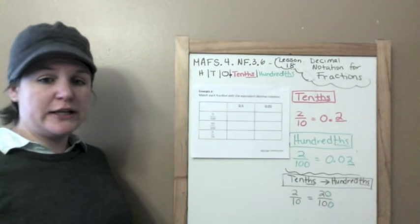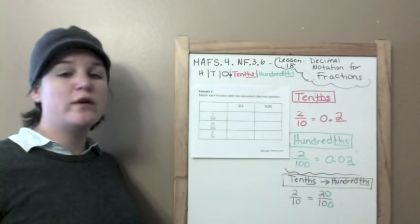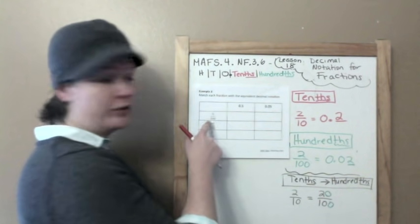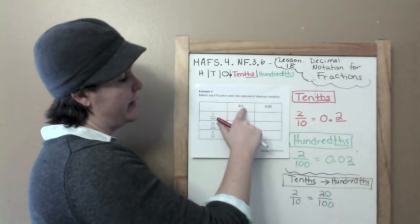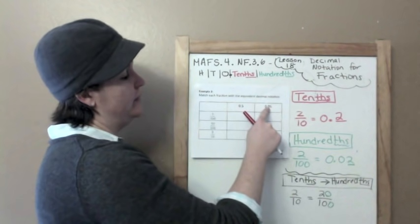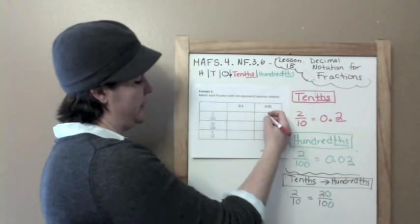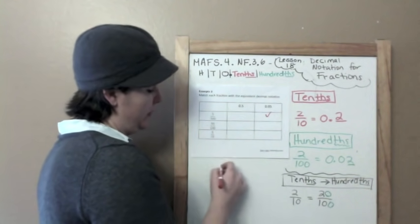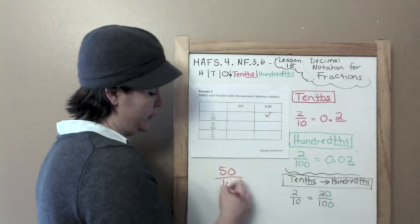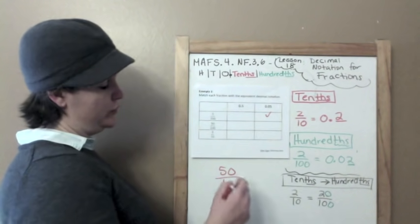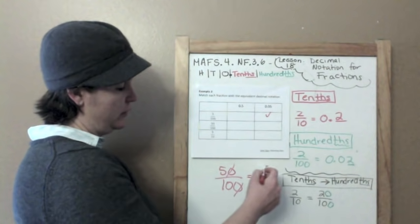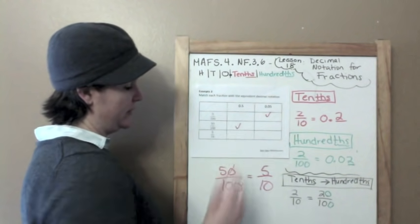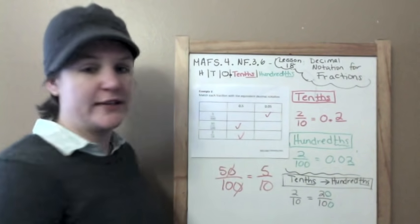All right, example three. Match each fraction with the equivalent decimal notation. So this says five hundredths. The one written as 5/100. This is five tenths. And this is five hundredths. So I'm going to put that there. Fifty hundredths. Well, fifty hundredths is equal to five tenths. So that's going to go right there. And then five tenths is equivalent to five tenths. We're on example four already.